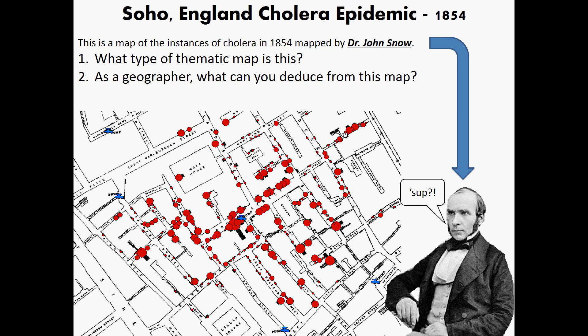We can see our two questions from previous day's studies. The type of thematic map here, remember all thematic maps tell a story. The story being told here is where are the instances of cholera, and it is a proportional dot map. We notice the dots get bigger as the intensity of the phenomenon increases. Secondly, as a geographer, what can you deduce from this? You should deduce that cholera is a water-borne disease, not a sin-borne disease. And that's our featured figure today, Dr. John Snow.